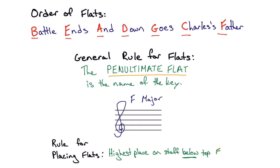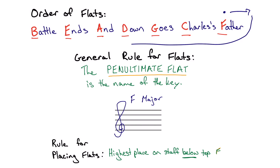Let's look at one trickier example: the key of F major. Normally we'd get to the penultimate flat and add one more, but if F is already the start of our order and we try to go one more, we'd wrap back around to the beginning. F major only has one flat: B♭. We wouldn't write all the flats and add B♭ again — instead just write B♭. F major is a good key to simply memorize as having only one flat. If you can remember the general rule that the penultimate flat is the name of the key, that will help you both identify and construct key signatures from scratch.